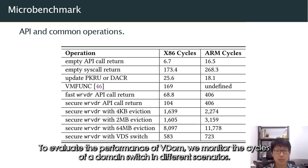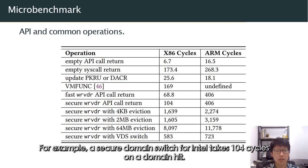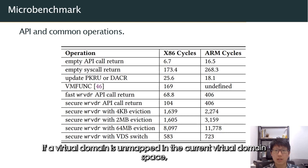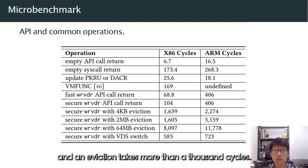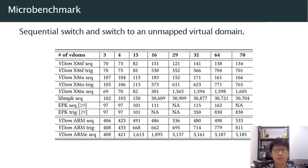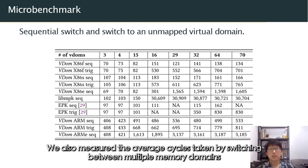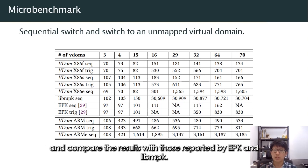To evaluate the performance of VDOM, we measure the cycles of domain switch in different scenarios. The secure domain switch for Intel takes 104 cycles on a domain hit. If a virtual domain is unmapped in the current virtual domain space, an address space switch takes 583 cycles and an eviction takes more than a thousand cycles. We also measured the average cycles taken by switching between multiple memory domains and compared them with results reported by EPK and LibMPK.